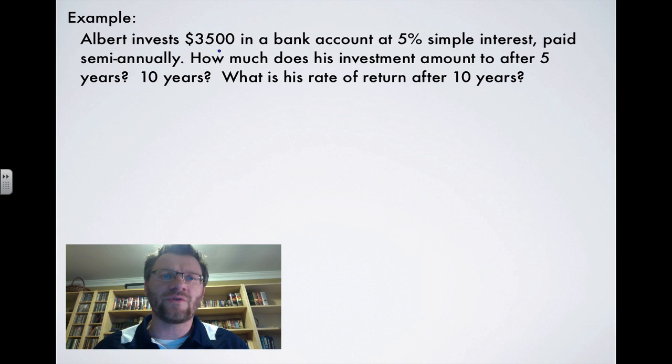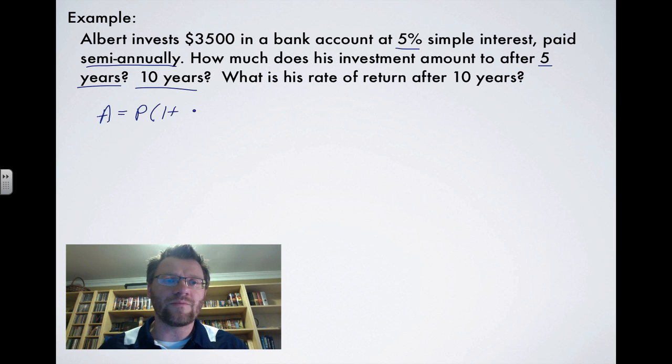So here's our example. It says, Elbert invests $3,500 in a bank account at 5% simple interest paid semi-annually. How much does his investment amount to after five years and after 10 years? And then what is his rate of return after 10 years? So using our formula, we've got A equals P, one plus R T. So the amount in the account is $3,500 to begin with. One plus our rate, well, that's 5%. But since it's being paid semi-annually, that's actually half of that, which is 2.5%. So we'll write that as a decimal. And that's over five years. So putting that in our calculator, we find out the total amount in the account after five years is $3,937.50.